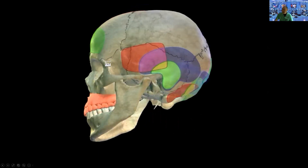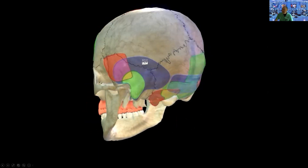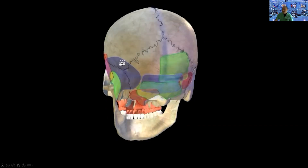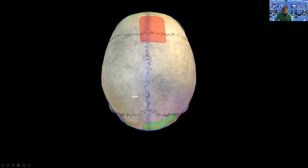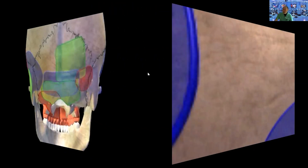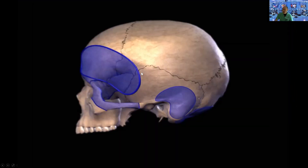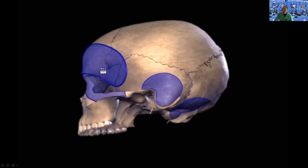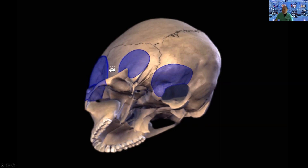We'll consider all the transpetrosal, subtemporal, and retropetrosal approaches, then go posterolateral to the retrosigmoid, and some of the posterior transpetrosal approaches including the far lateral. If time permits, we'll also cover the supracerebellar infratentorial, interhemispheric, and some transcallosal approaches. But to make it short, the three most important ones we use mostly for skull base are the anterolateral — mostly the orbitozygomatic — the lateral transpetrosal, and the far lateral posteriorly.